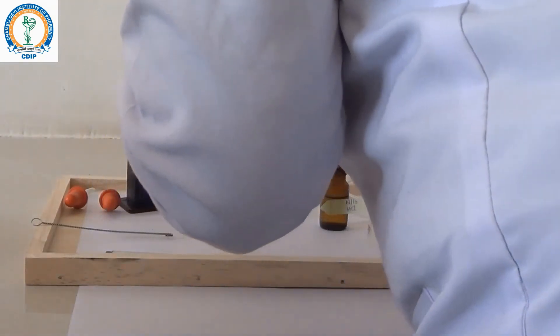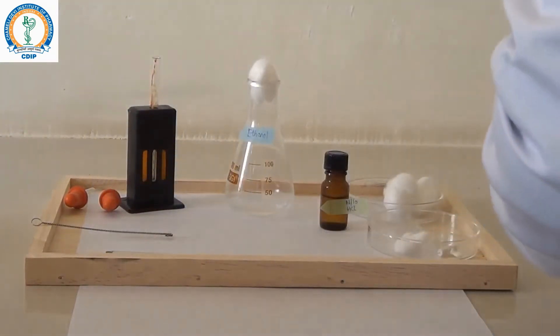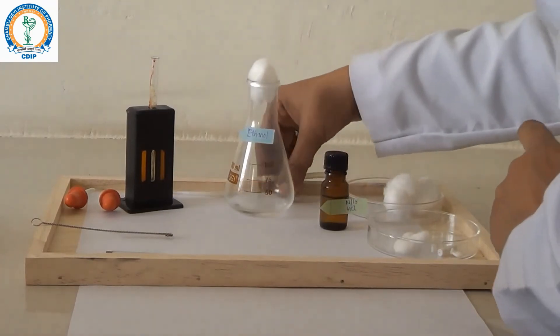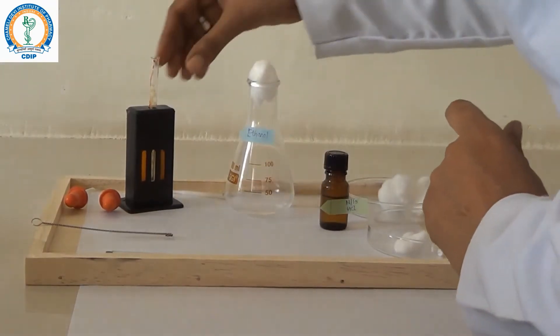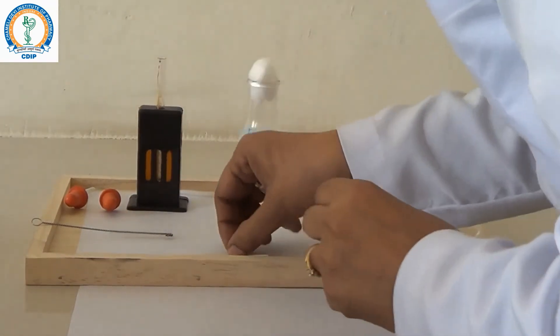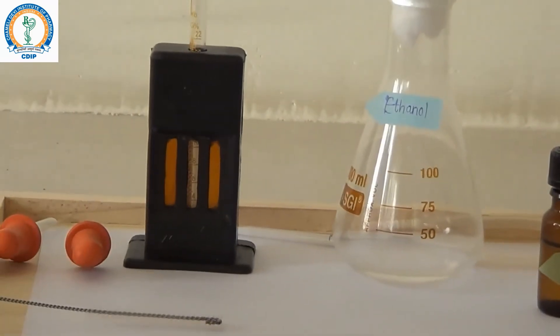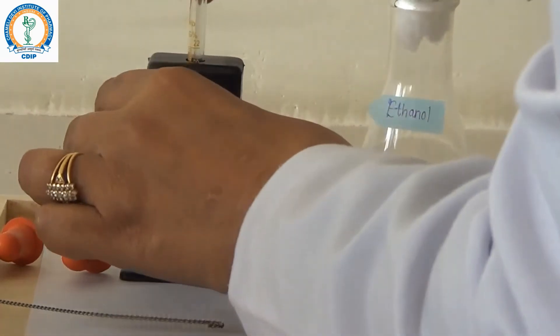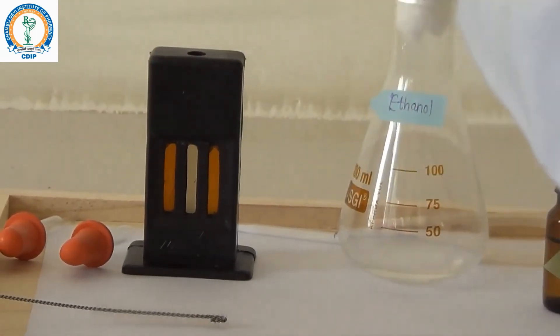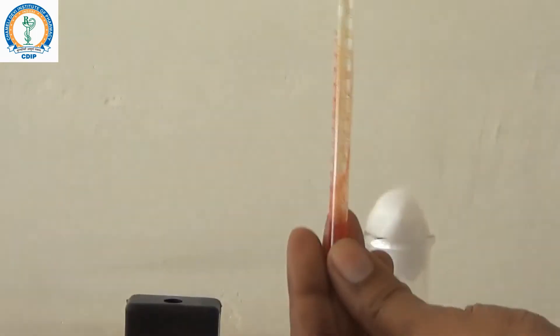Now, immediately pour this blood into the graduated tube which already contains N by 10 HCL, and mix the blood and the HCL thoroughly.